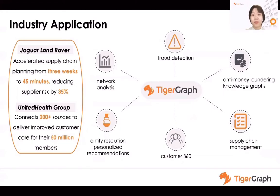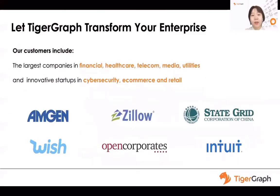TigerGraph also enjoys wide industry application. TigerGraph accelerated supply chain planning from three weeks to 45 minutes and reduced supply risk by 35%. UnitedHealth Group uses TigerGraph to connect 200-plus sources to deliver improved customer care for their 15 million members. TigerGraph's applications also exist in network analysis, entity resolution, all-round customer journey, and supply chain management. TigerGraph has been providing customized solutions for the largest companies in financial, healthcare, telecom, media, and utilities, as well as innovative startups in cybersecurity, e-commerce, and retail.